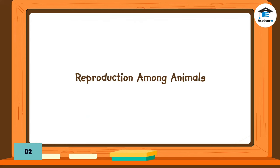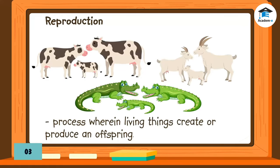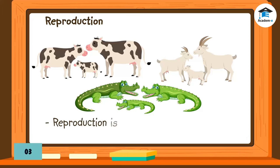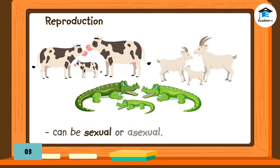Reproduction among animals: Reproduction is the process wherein living things create or produce offspring. Offspring are new living things that look like their parents — like you, a young human that looks like your parents, or the parent and young cat. Reproduction is needed for the continuous survival of a certain group of living things.